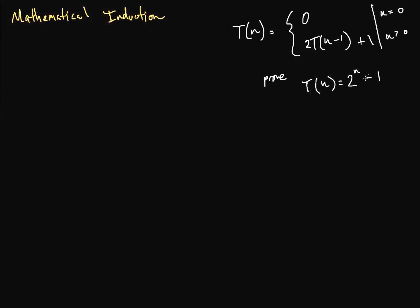So we have a recurrence relation here. It says that T(n) is equal to 0 when n is equal to 0, and when n is greater than 0, T(n) is equal to 2 times T(n minus 1) plus 1. And we are asked to prove that T(n) is actually equal to 2 to the n minus 1.